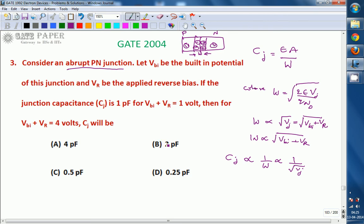So Cj is inversely related. Cj, if you are removing the proportionality constant, is K by square root of Vj.